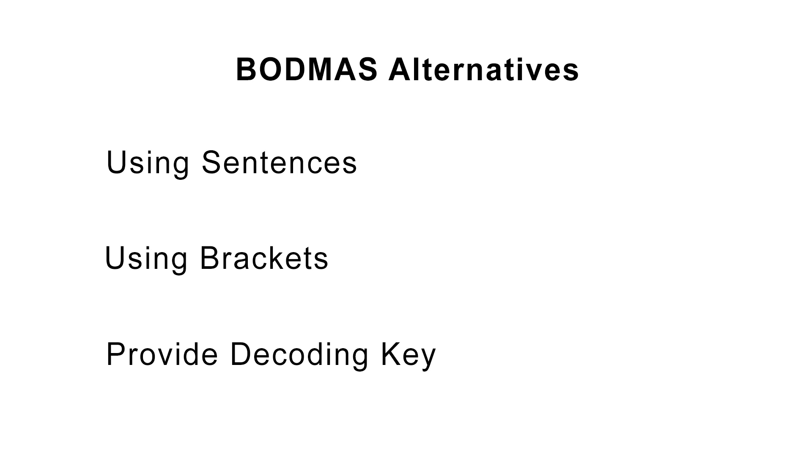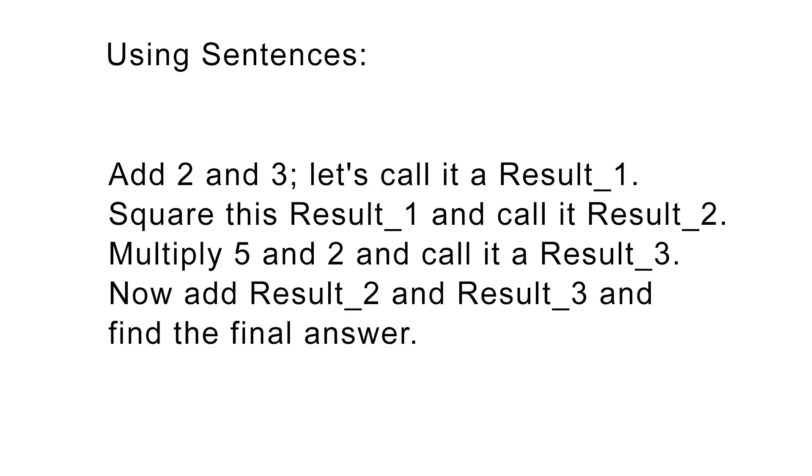I can imagine three different ways we can execute this. The first one is using sentences. If we are explicit about what operation should be done when then the order of operations rule won't be necessary.